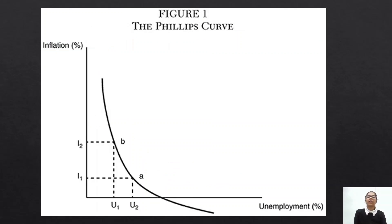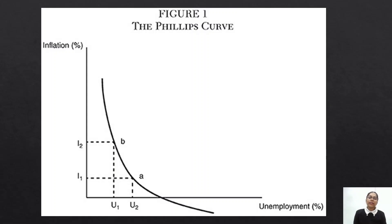What policy makers started doing was formulating their policies on the basis of this relationship — the negative relationship and trade-off between unemployment and inflation. Jab bhi unemployment increase ho jati thi, policy makers would formulate policies to increase inflation, because when inflation increases, unemployment falls. For example, expansionary monetary policy or expansionary fiscal policy, jiski wajah se inflation increase ho jati aur unemployment automatically fall ho jati.